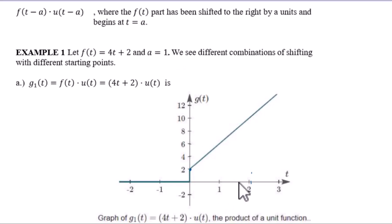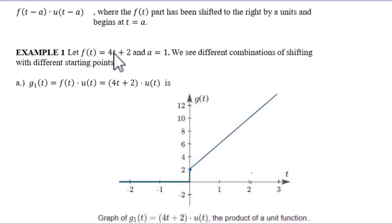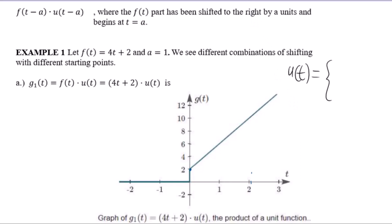That means at t equals to 1, we reference our a. For case 1, the product of function of t and unit step function u(t) is g1(t). The given function of t is 4t plus 2, which is a linear function because the exponent of our variable is 1. This is multiplied by our unit step function, which is defined as zero when t is less than zero, and one when t is greater than or equal to zero.